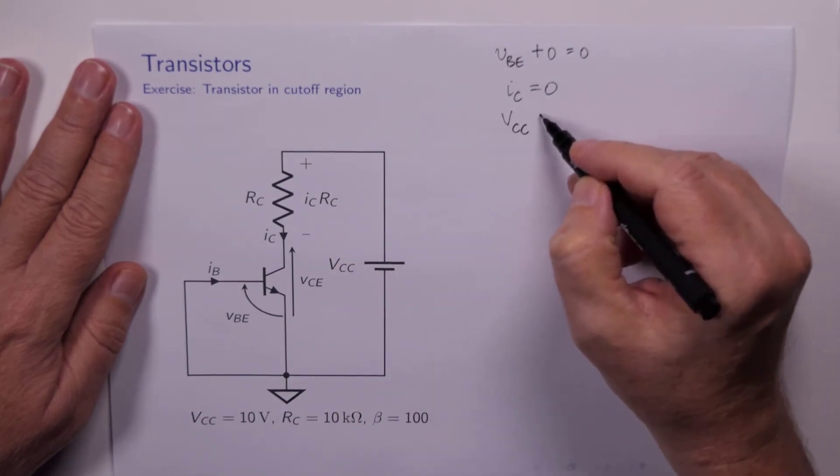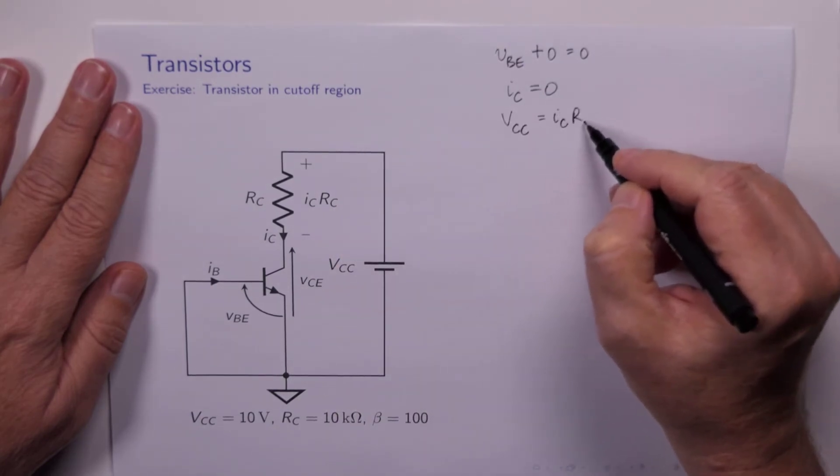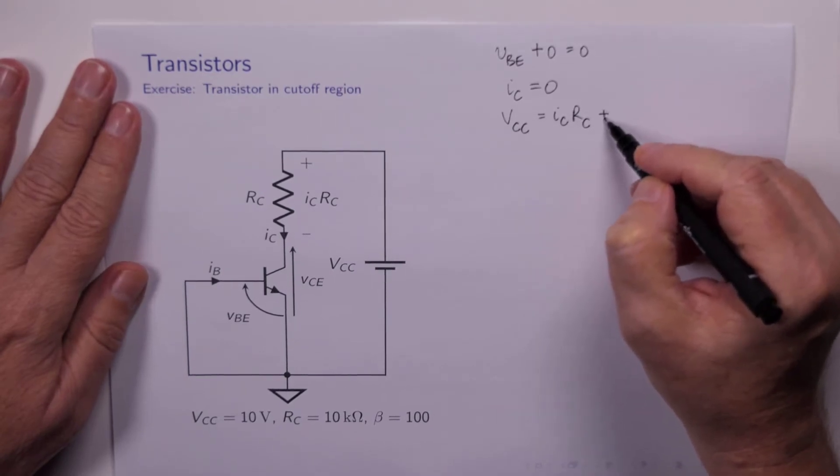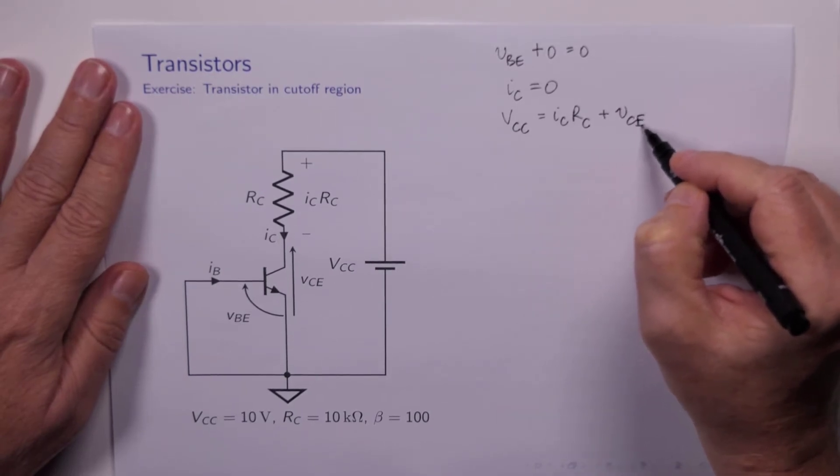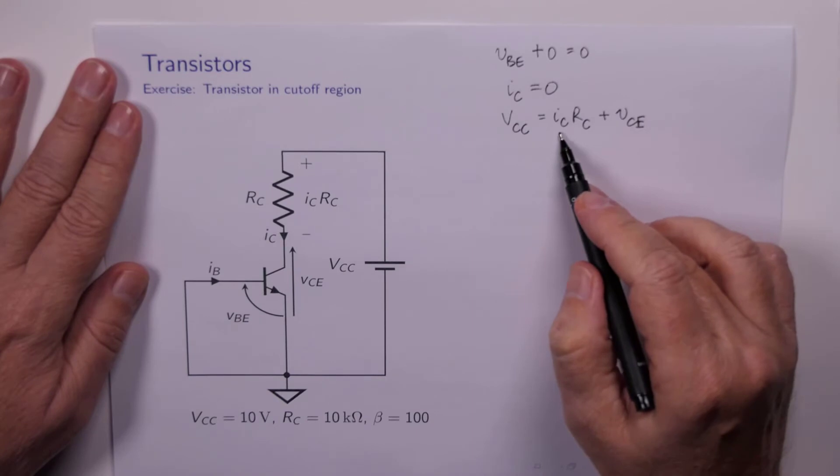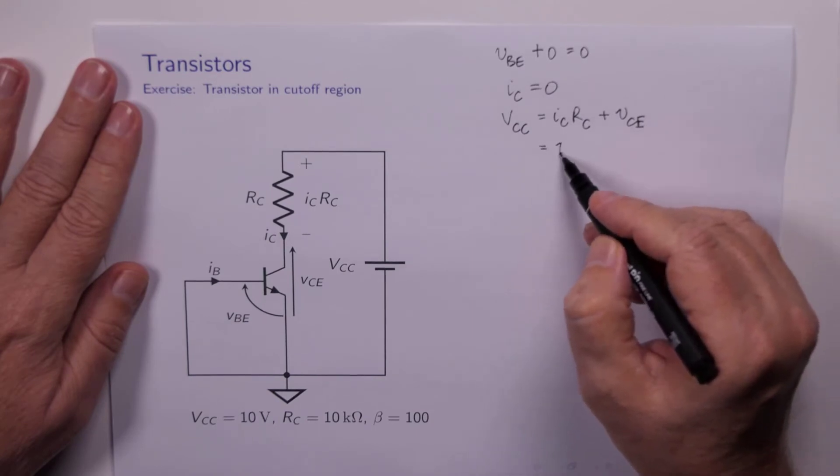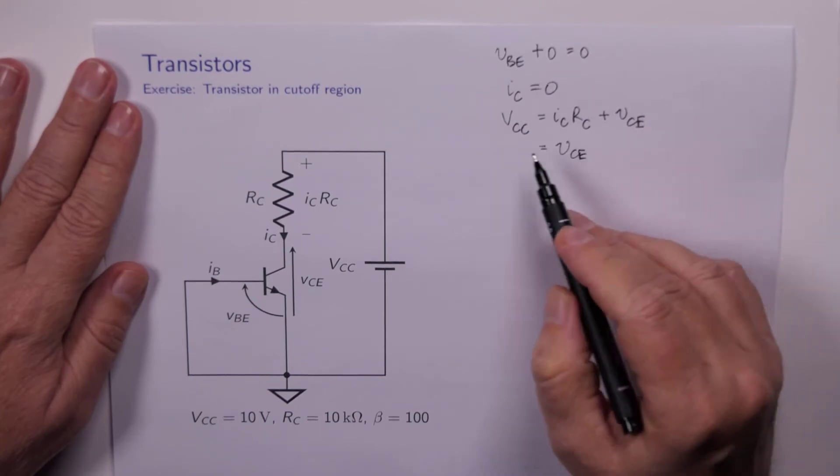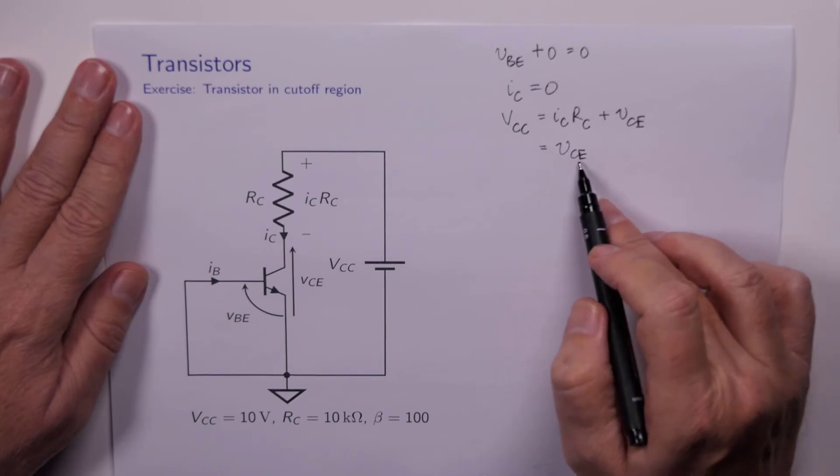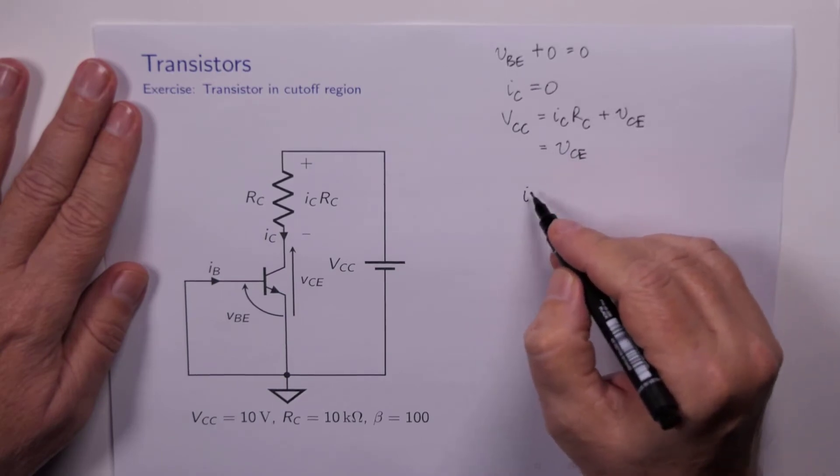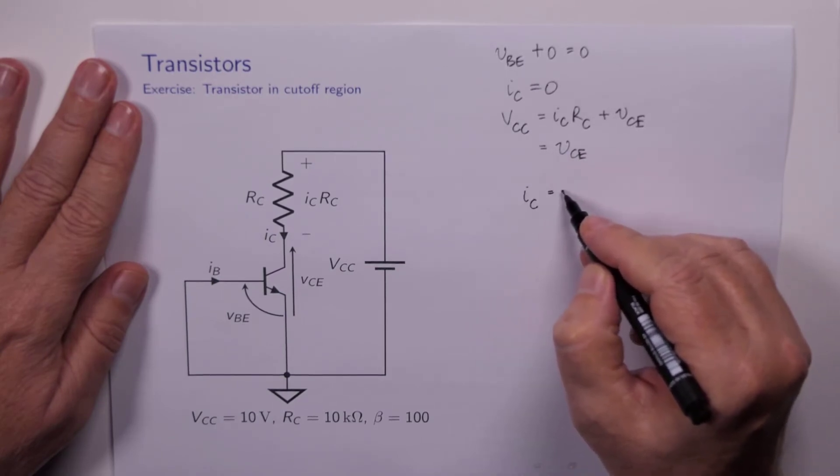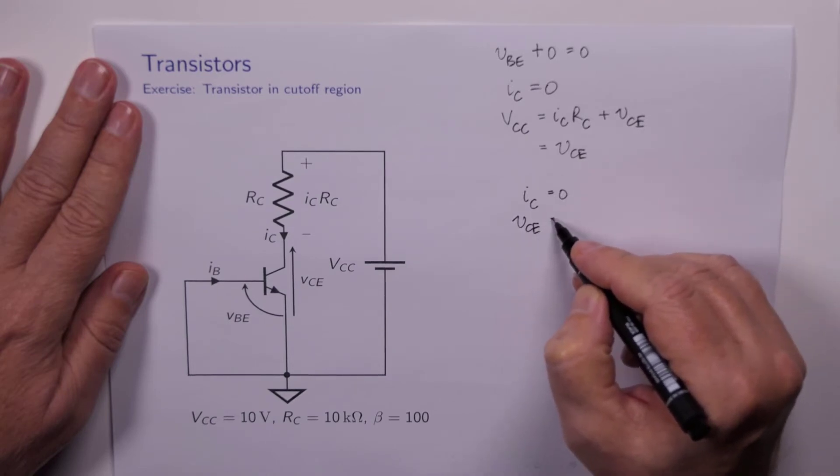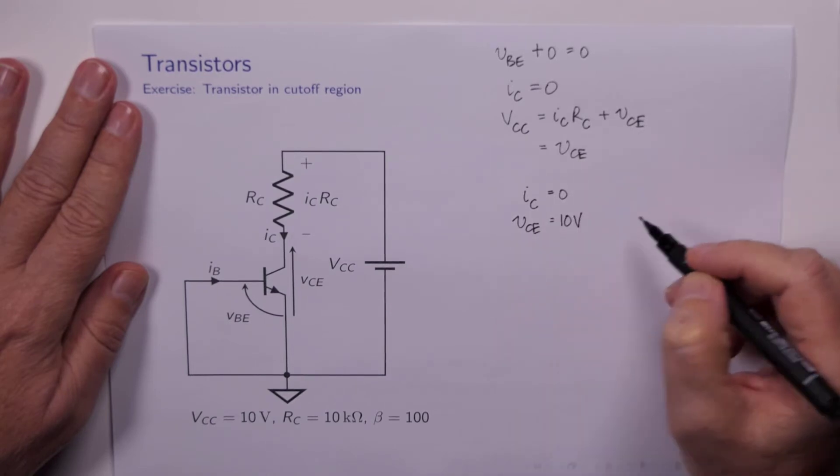And if we were to sum the voltages around this loop, of course, we have VCC equals IC RC plus VCE. Well, if IC is equal to 0, we just have VCC equals VCE.